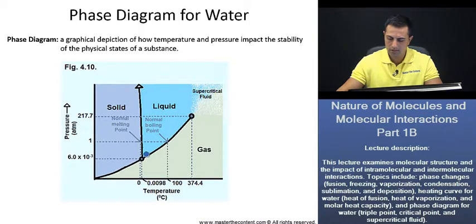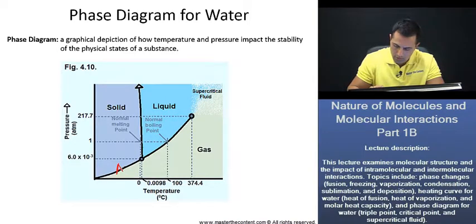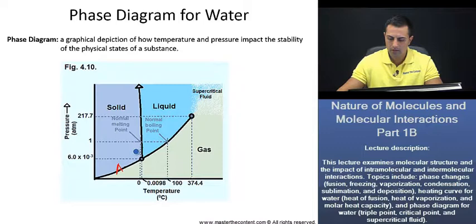Now, these lines here, they're also significant as well. If we take a look here at this first line, we'll consider this to be solid line A. At this point here, the solid ice and the gaseous water vapor are going to be at equilibrium at these pressure-temperature combinations. Furthermore, solid line A here gives us all the different sublimation points for water at the different pressure and temperature combinations.